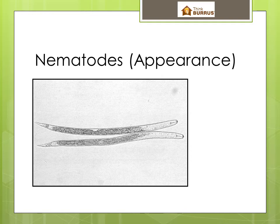If you wondered what these things look like, this is a great picture to start with. You get the impression it was taken with a microscope, and that's because it was. These are actually juvenile soybean cyst nematodes in the picture — a great example to start with. Think of these being shorter than the diameter of a period at the end of a sentence. You'll notice they look worm-like or eel-like in appearance, but they actually are very different from a worm.